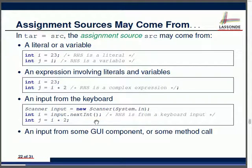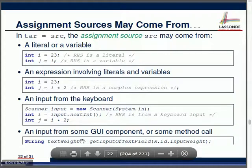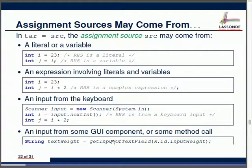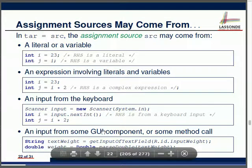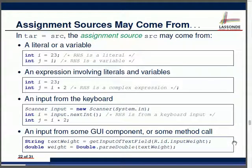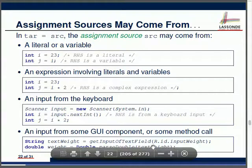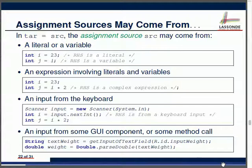The right-hand side can also be input from the keyboard using a Scanner — for example, i = input.nextInt(). Whatever you type — 23 or 46 — gets stored in i. We can also read from a text field in an Android app: String textWeight = getTextFieldInput(id), and then convert that to a double using Double.parseDouble(textWeight). These are different ways to get values for the right-hand side.